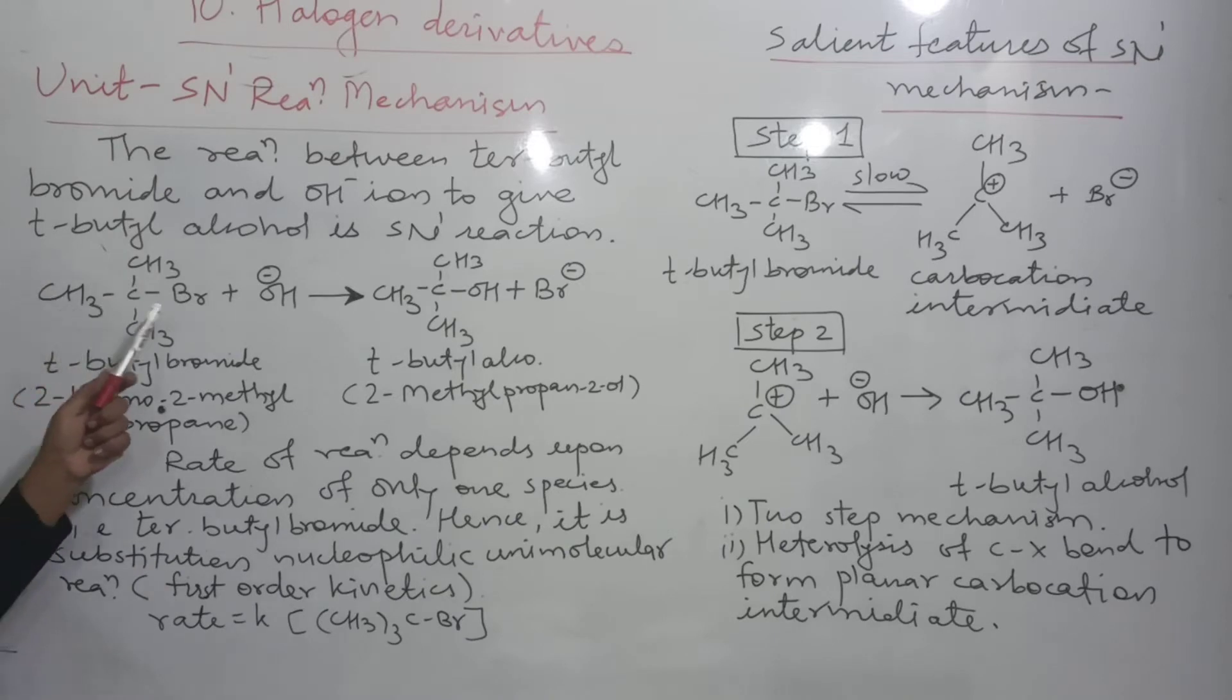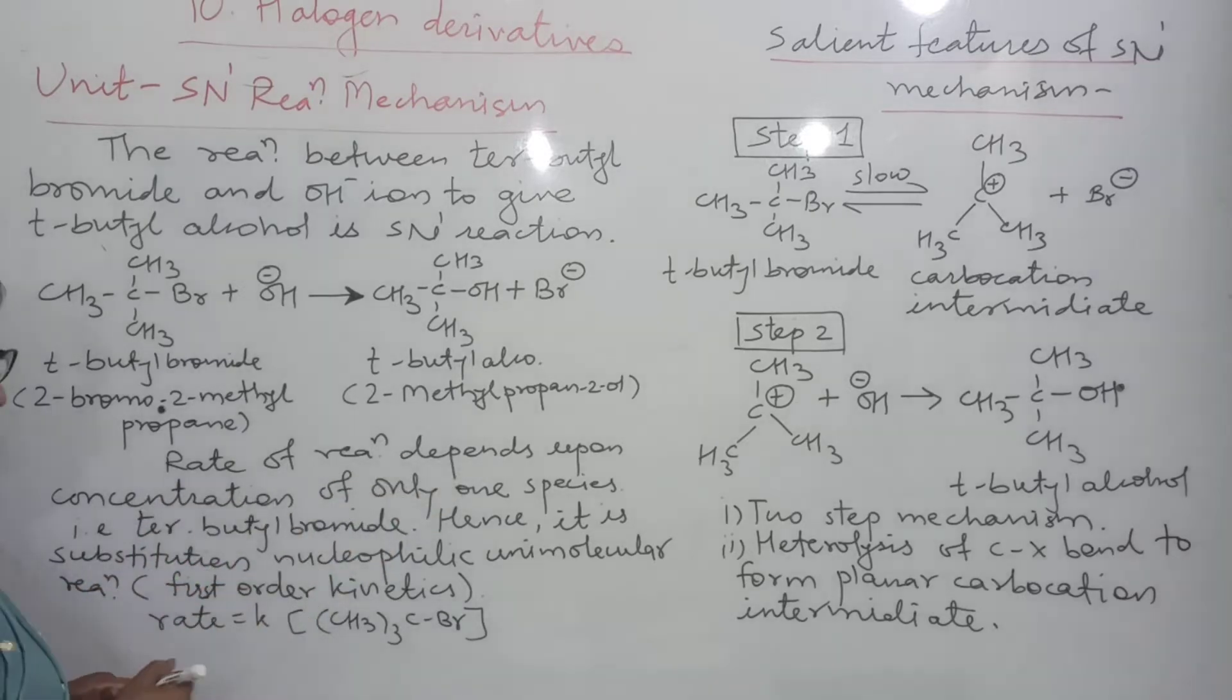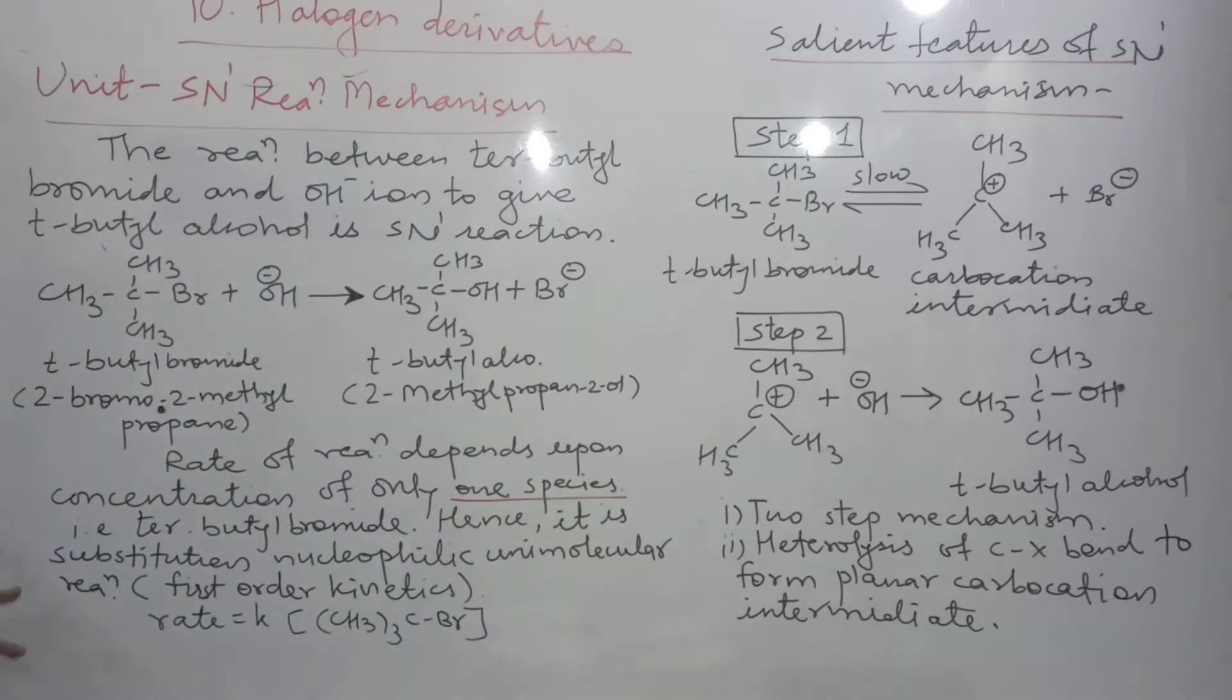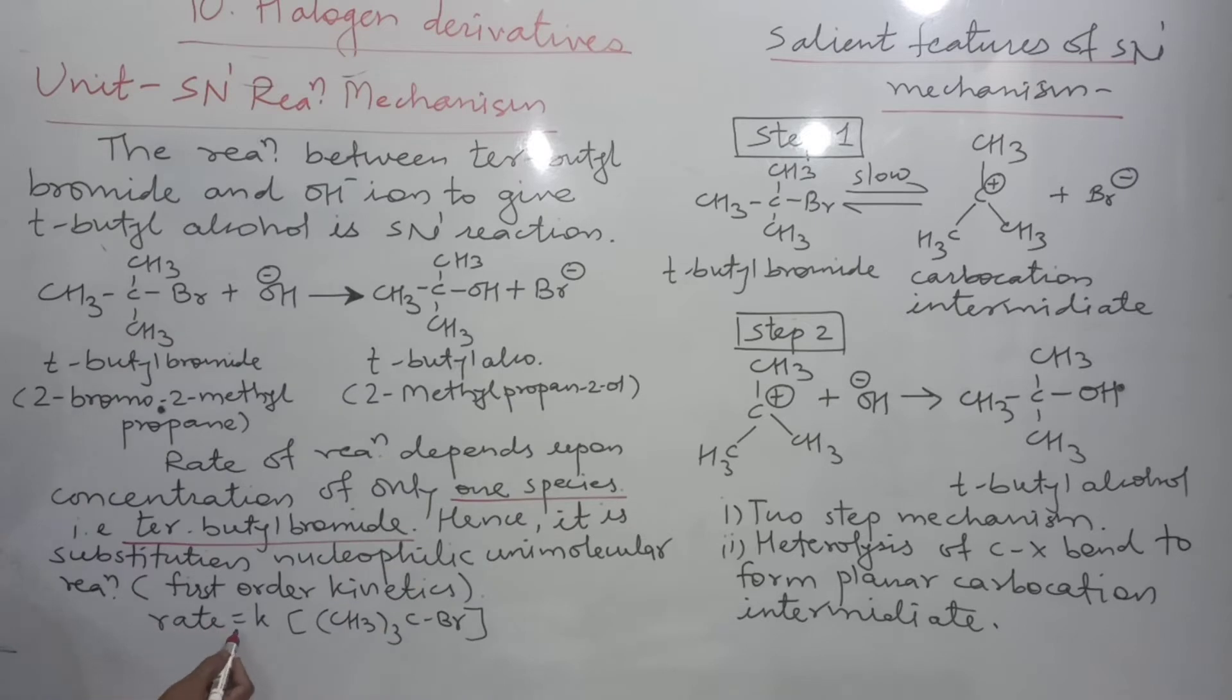In this manner, the half mark is for this reaction. Half mark for writing SN1 is first order reaction. Why we call it first order reaction? Because the rate of the reaction depends upon concentration of only one species. Rate of reaction, which may depend here? Only one species and that is the tertiary butyl bromide. So, you can write rate equal to K, tertiary butyl bromide concentration of only one reactant.